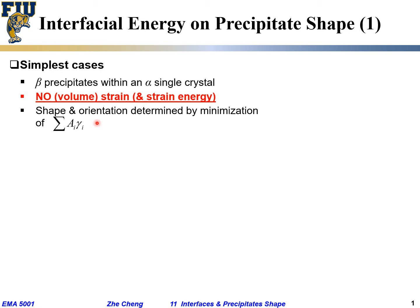If we neglect the volume misfit energy, the equilibrium shape would be determined by the minimization of this whole thing. Make sense?